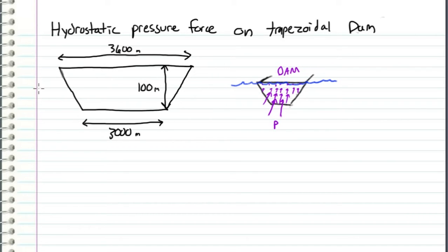We have a wall in the shape of a trapezoid submerged in water, so there is a pressure distribution along the face of this trapezoid.